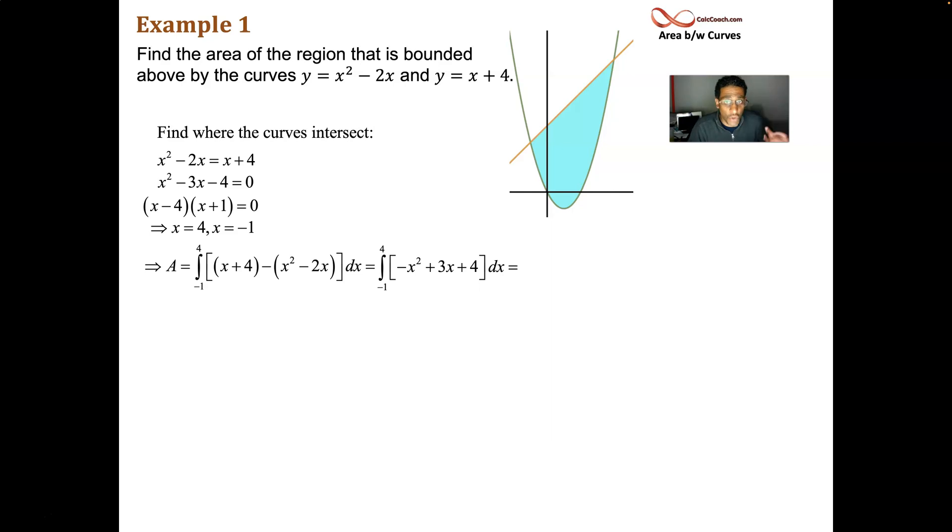Fundamental theorem of calculus says, go find the antiderivative and plug in the bounds. Add 1 to the exponent, divide by the same thing. Negative x cubed over 3, plus 3x squared over 2, plus 4x. Fundamental theorem of calculus says, we've got to plug in the upper bound and subtract what we get by plugging in the lower bound. So, let's do that. Be careful.